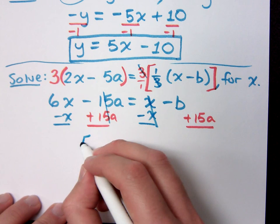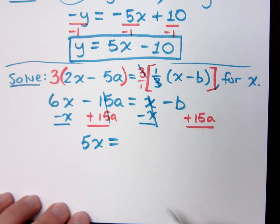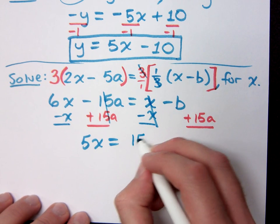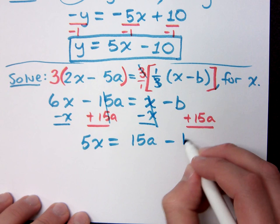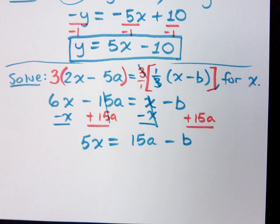So I have 5x equals what? 15a minus b. I want to say 15a minus b. Could you also say negative b plus 15a? You could. A lot of times you'll see the variable terms written in alphabetical order.